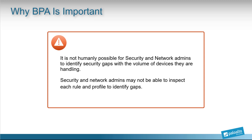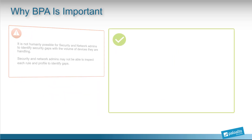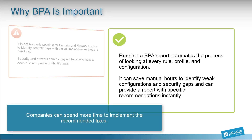Security and network admins may not be able to inspect each rule and profile to identify gaps. Running a best practice assessment report automates the process of looking at every rule, profile, and configuration. It can save several man hours to identify weak configurations and security gaps, and can provide a report with specific recommendations instantly. With the saved man hours, companies can spend more time to implement the recommended fixes.